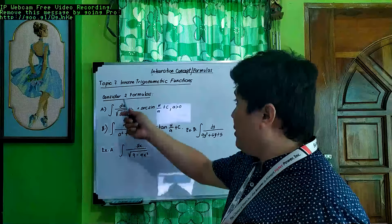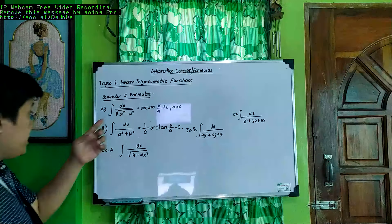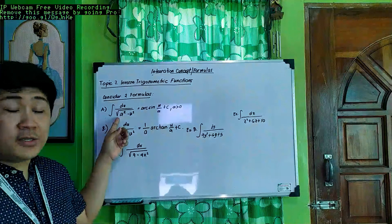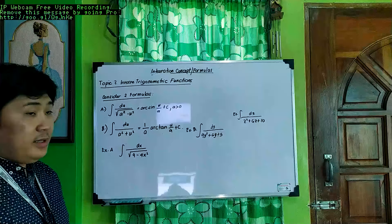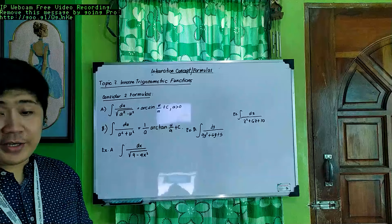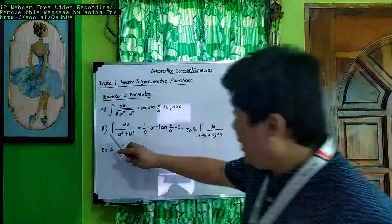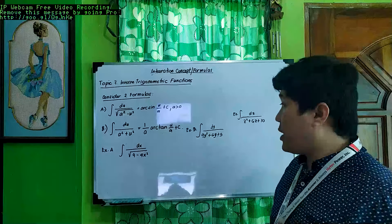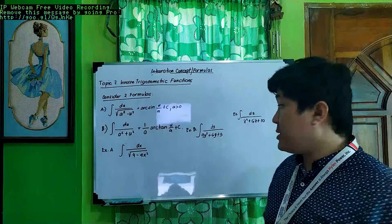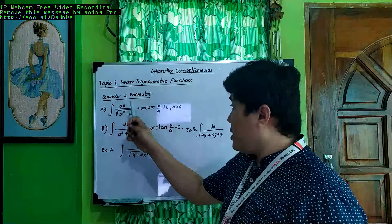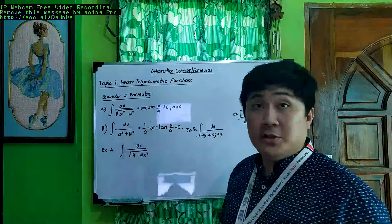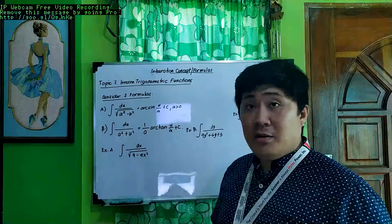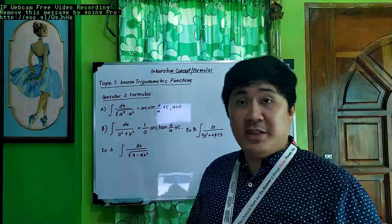Here we'll be considering two formulas of the inverse trigonometric functions. The first is the integral of du over the square root of a squared minus u squared, which is equal to arcsin(u/a) plus C, where a is greater than 0. The second formula is the integral of du over a squared plus u squared, which is equal to (1/a) arctan(u/a) plus C. Remember that du is the differential of u, u is a variable, and a is a constant value.